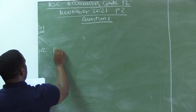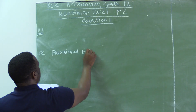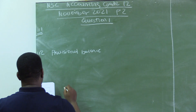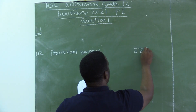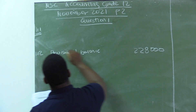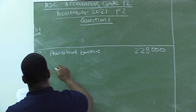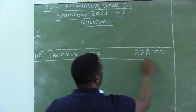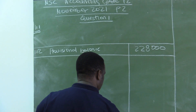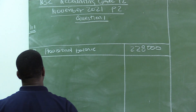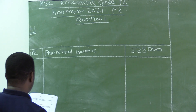There is a provisional balance and also there is an amount here of 228,000. So this was provided in the answer sheet. It's important to understand that in accounting, some information you get from the answer sheet.